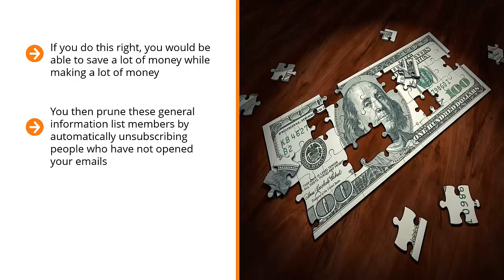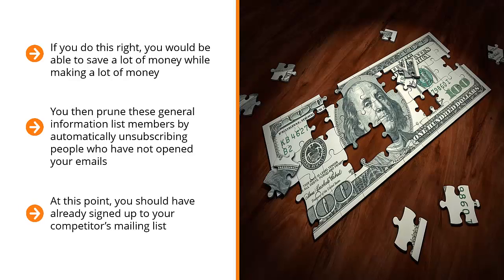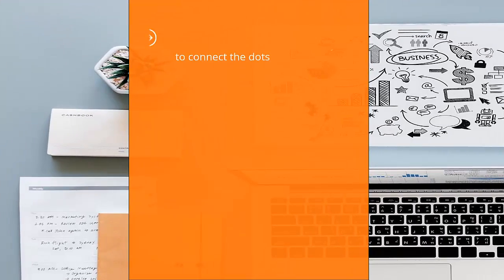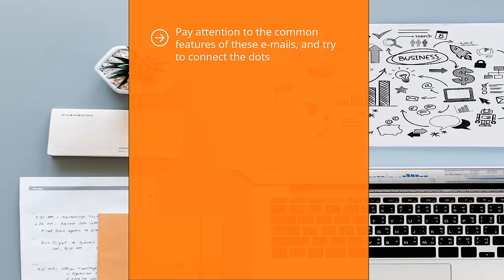Be aware of your competitor's industry standard list segmentation. At this point, you should have already signed up to your competitor's mailing list. You should already know the topics they send updates on and be very familiar with the content of their updates. Pay attention to the common features of these emails and try to connect the dots — how do they segment their list members?